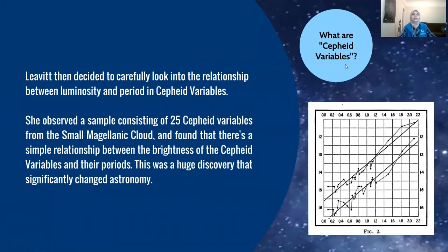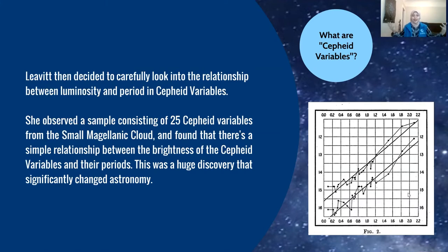Leavitt observed a sample of 25 cepheid variables from the Small Magellanic Cloud and found a simple relationship between the brightness of the cepheid variables and their period. Here is the graph that she plotted, and this was a huge discovery that significantly changed astronomy. We will soon learn just how much impact it had.